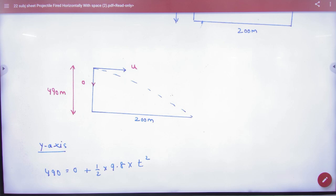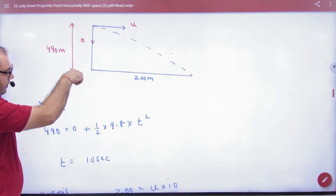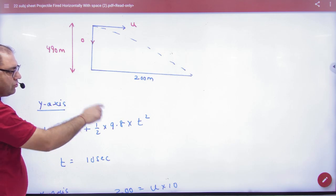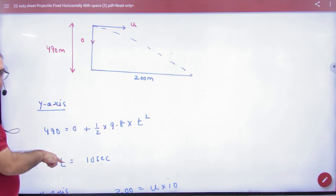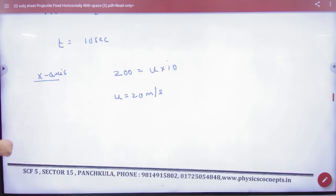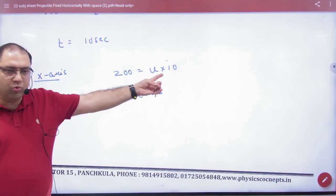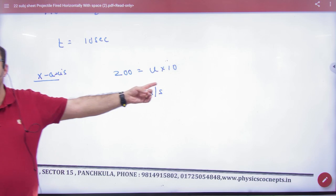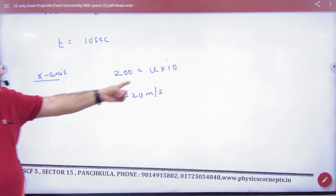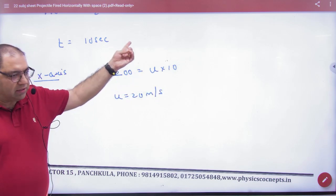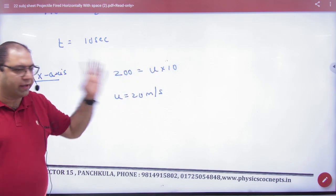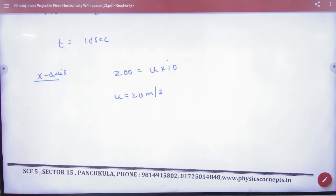So what will you do in this portion? Y-axis, 490 is 0 plus half gt square. Time will come in 10 seconds. Then we apply in x-axis. S is vt. 200 is u, because horizontal velocity u will remain same. u into t. Time 10. Put u. Do you understand all these points? How do you do it?